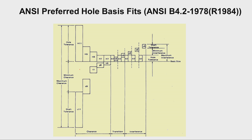The basic holes are H11, H9, H8, where the deviation is 0, meaning the lower limit of the hole equals the basic size. The preferred shafts are C11, D9, F7, G6, H6. For the H11/C11 combination, there is a large clearance. The difference between the minimum hole size and maximum shaft size gives minimum clearance, while the difference between maximum hole and minimum shaft gives maximum clearance.